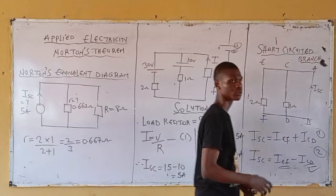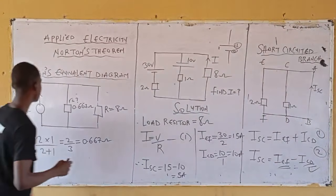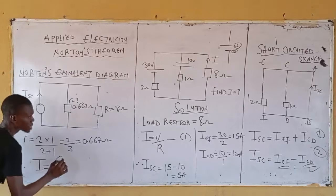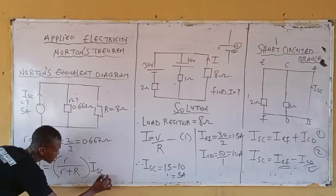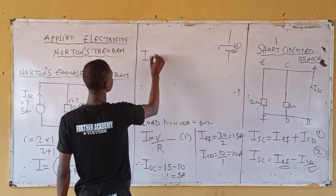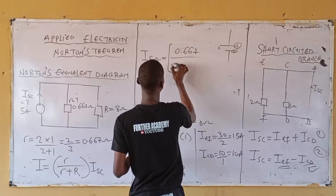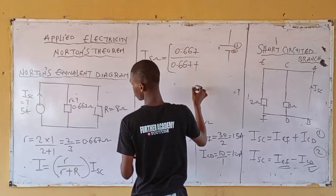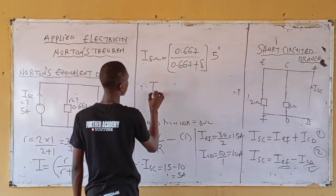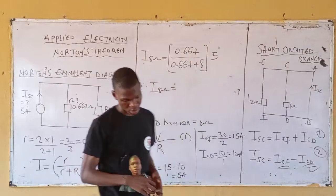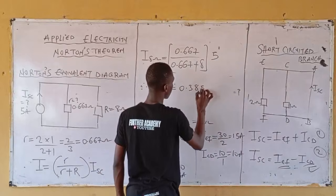Lastly, apply the Norton current divider formula: I equals R_equivalent over (R_equivalent plus R_load), multiplied by I_sc. Substituting: the current flowing through the 8 ohm resistor equals 0.667 divided by (0.667 plus 8), all multiplied by 5. Using your calculator, I of the 8 ohm resistor equals 0.385 ampere.